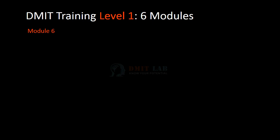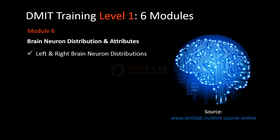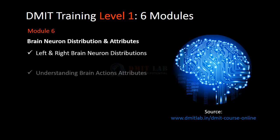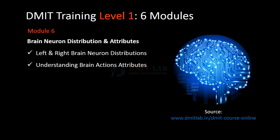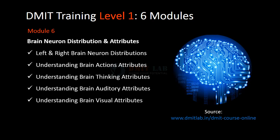In module 6 you will learn brain neuron distribution and attributes. In that you will learn left and right brain neuron distributions, understanding brain action attributes, understanding brain thinking attributes, understanding brain auditory attributes, understanding brain visual attributes, and fine motor and gross motor attributes.